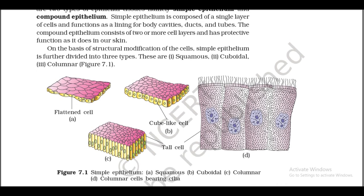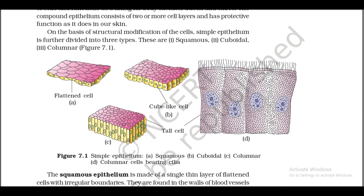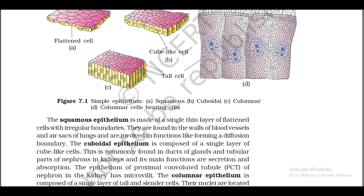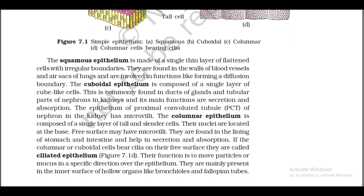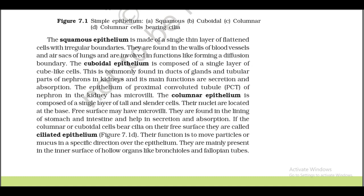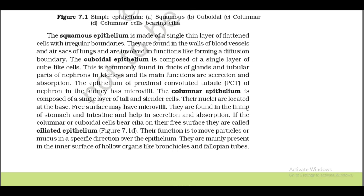On the basis of structural modification of the cells, simple epithelium is further divided into three types: squamous, cuboidal, and columnar, including columnar cells bearing cilia. The squamous epithelium is made of a single thin layer of flattened cells with irregular boundaries. They are found in the walls of blood vessels and air sacs of lungs, and are involved in functions like forming a diffusion boundary.